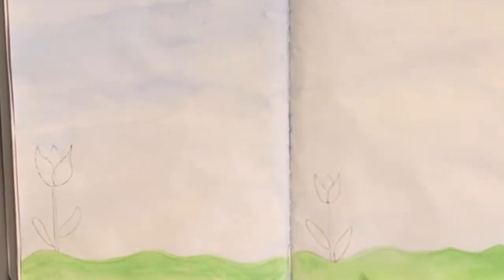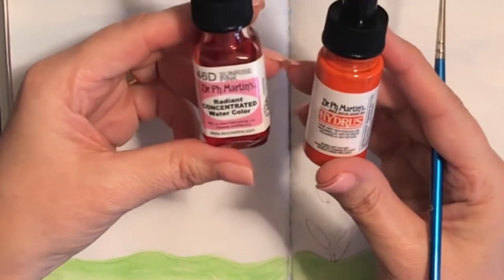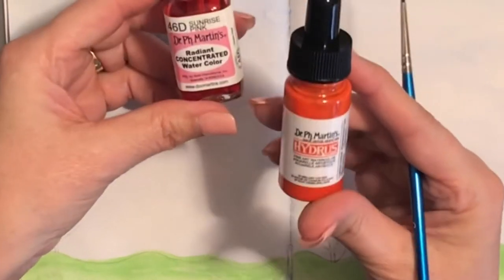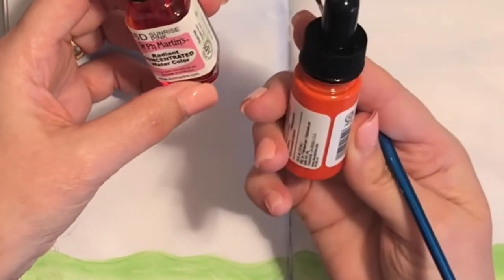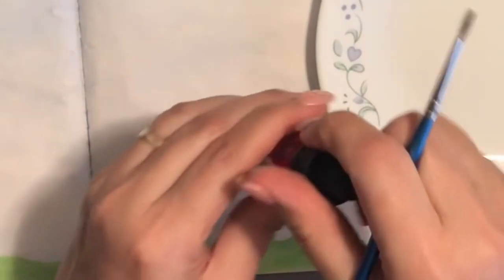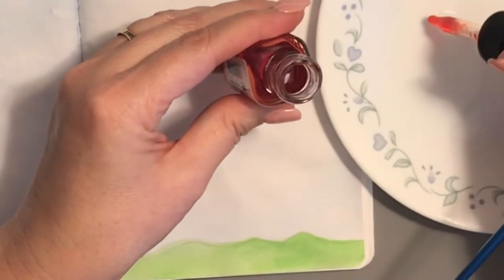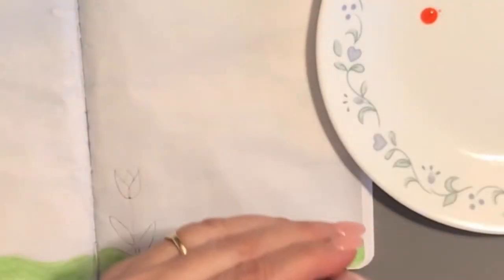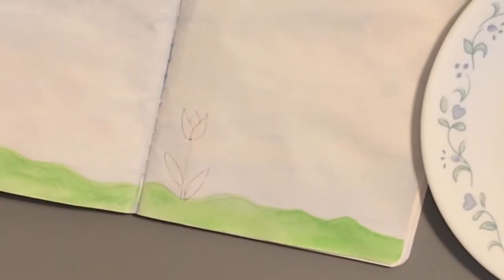For the tulips, I am going to use Dr. pH Martin's liquid watercolors. This is Sunrise Pink and this is Brilliant Cadmium Red, which looks orange, but that's what cadmium red is. Liquid watercolor just needs such a small amount—just one drop, that's it. Add some water.